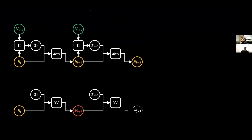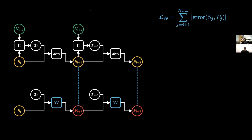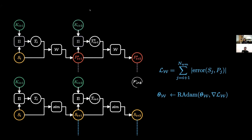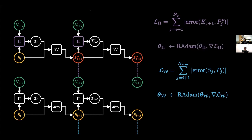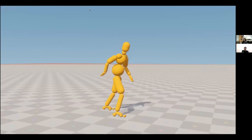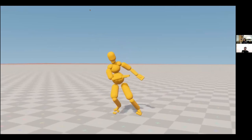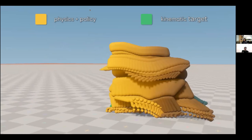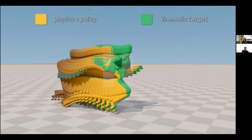The world model makes a sequence of state predictions P based on the initial state of the slice and the associated sequence of control targets. A loss function is formulated from the sum of the magnitude of prediction errors, and the weights of the neural network representing the world model are optimized using backpropagation on the unrolled sequence. During policy optimization, the rollout associated with the slice is approximated using the world model in place of the simulator. This allows gradients of a loss with respect to policy parameters to be computed. The policy network weights are optimized directly to improve tracking performance. The character shown is physically simulated and controlled by a policy trained using our method, tracking the target kinematic state shown in green.